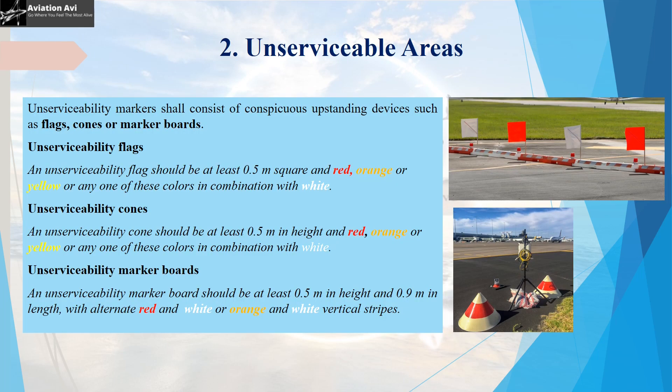So this basically alerts all the stakeholders that there is some construction work going on and that area is restricted for usage. Let us look at the specifications of devices that are used for denoting unserviceable areas. These markers can consist of flags, cones, or marker boards. Unserviceability flags should be at least 0.5m square and red, orange, or yellow, or any one of these colours in combination with white can be used. As you can see in the image, there are red colour unserviceability flags used in combination with white. The unserviceability cones should have a height of at least 0.5m and the colour used can be red, orange, or yellow, or any one of these colours in combination with white.